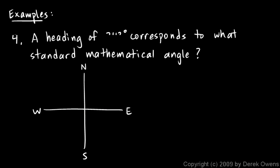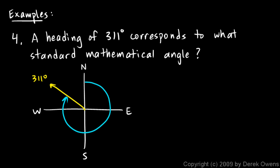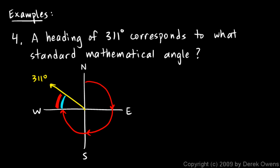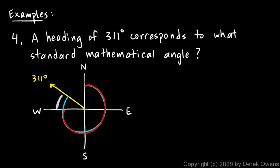Example 4: a heading of 311 degrees corresponds to what standard mathematical angle? 311 degrees lands about here — that much clockwise rotation from north is 311 degrees. Counting: 90, 180, 270. The reference angle is 311 minus 270, which is 41 degrees. So that's my reference angle: 41 degrees.